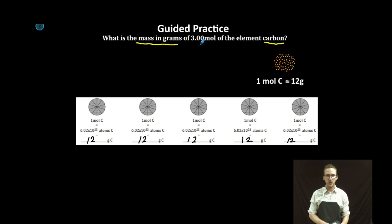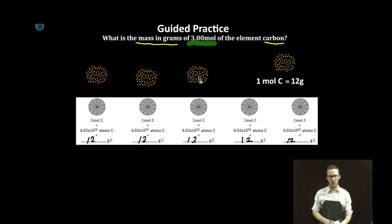Now, in this case, we're told that we have 3 moles of the element carbon. So here we go. 1 mole, 2 moles, lucky number 3 moles. Now, remember, each mole of carbon is approximately 12 grams.